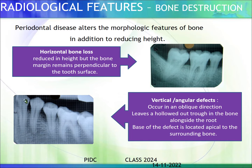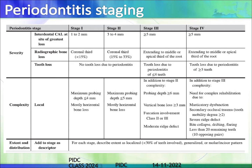Regarding radiologic features, there is usually bone destruction. Horizontal bone loss occurs when the bone is reduced in height but the bone margin remains perpendicular to the long axis of the teeth. On the other hand, vertical or angular bone loss shows an oblique or trough-like effect alongside the root, where the base of the defect is apical to the surrounding bone. If less than 30% of teeth are involved, we classify it as localized; more than 30% is classified as generalized.